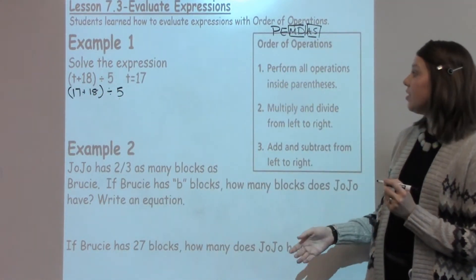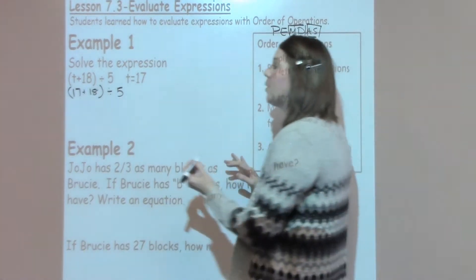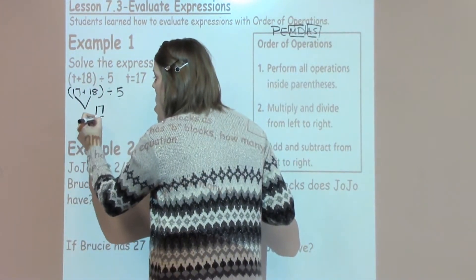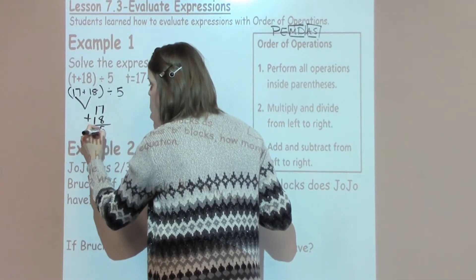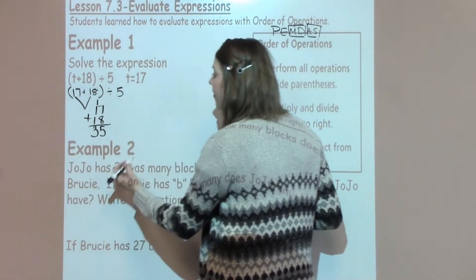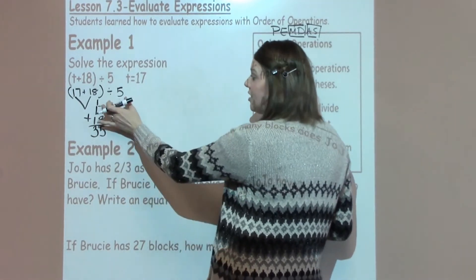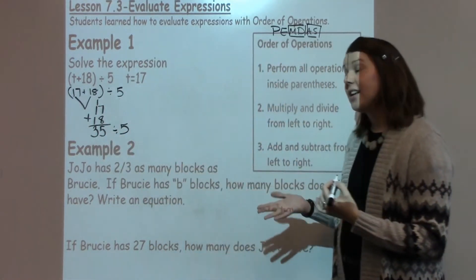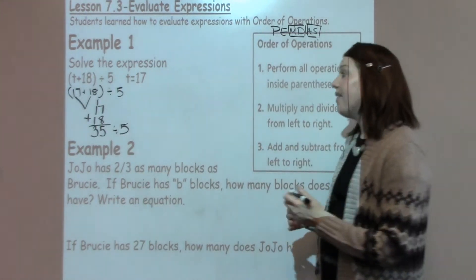What I'm going to do first is I'm going to go ahead and do my parentheses. So I'm going to go ahead and carrot these down. I'm going to take 17 plus 18, which is going to give me 35. Now I'm not finished because I need to go ahead and divide by 5. Some students might say this is a fact family. 35 divided by 5 is 7.